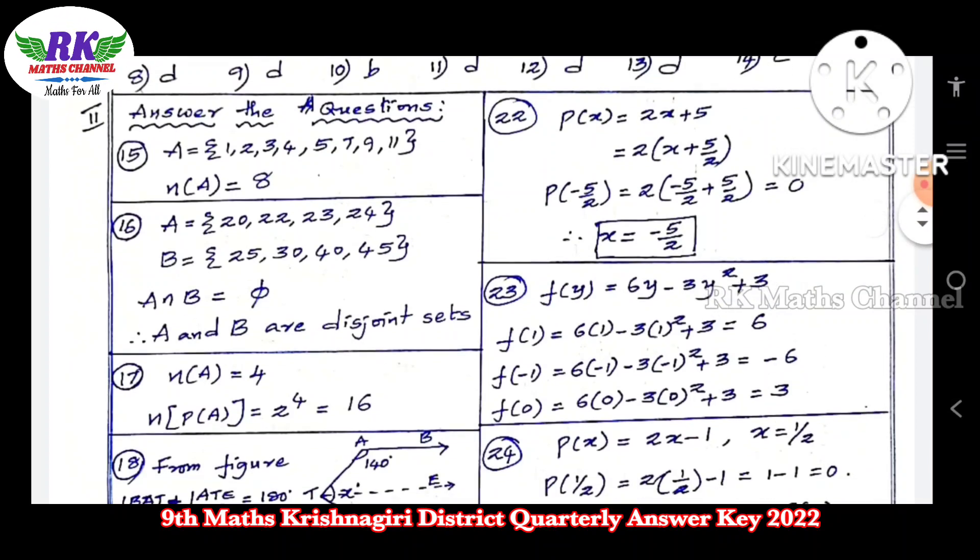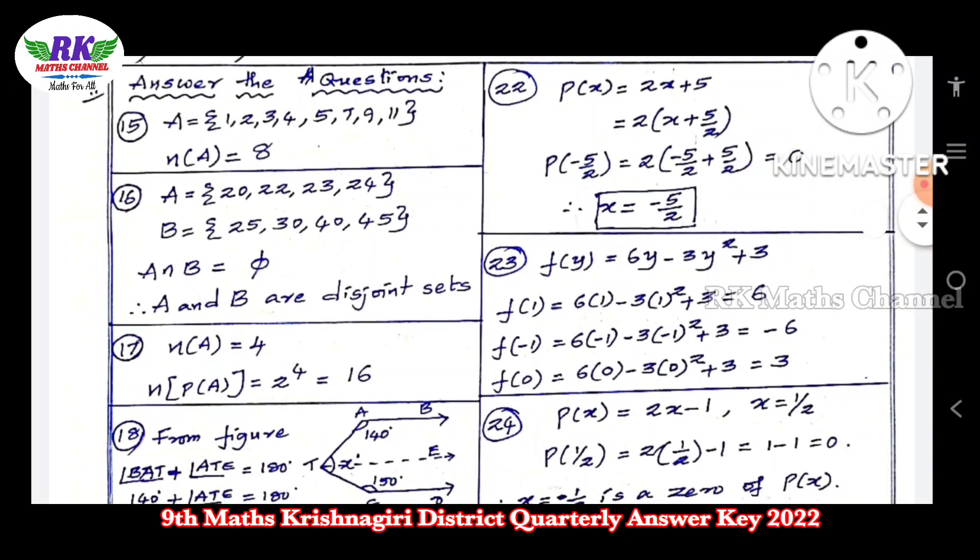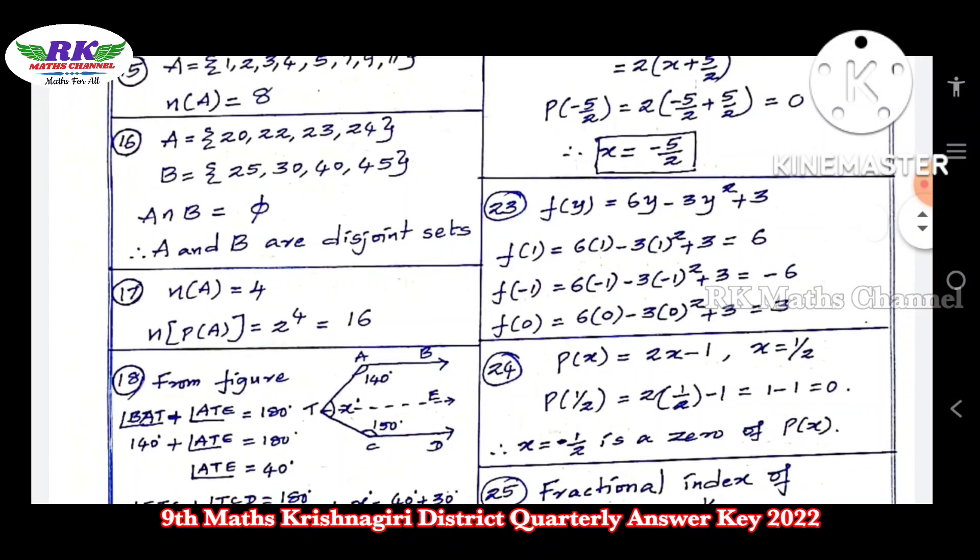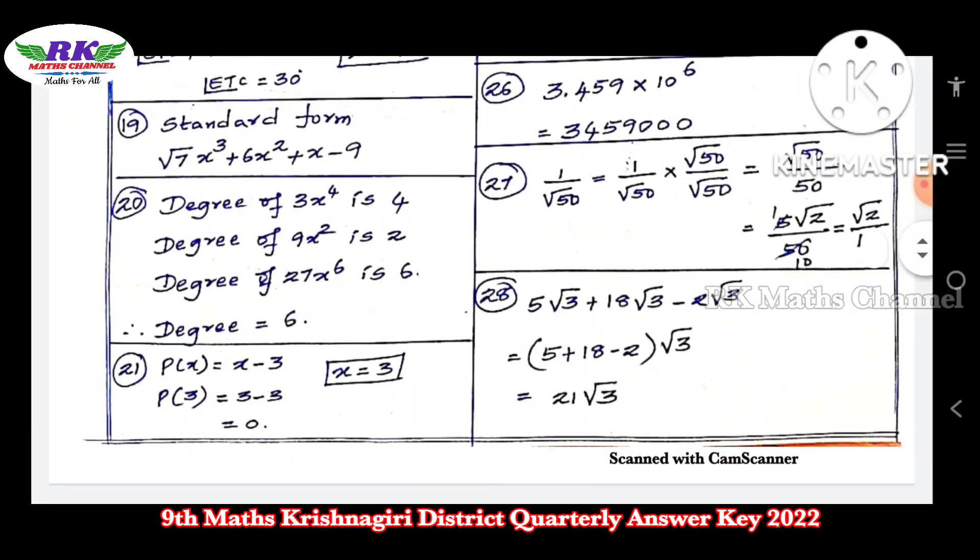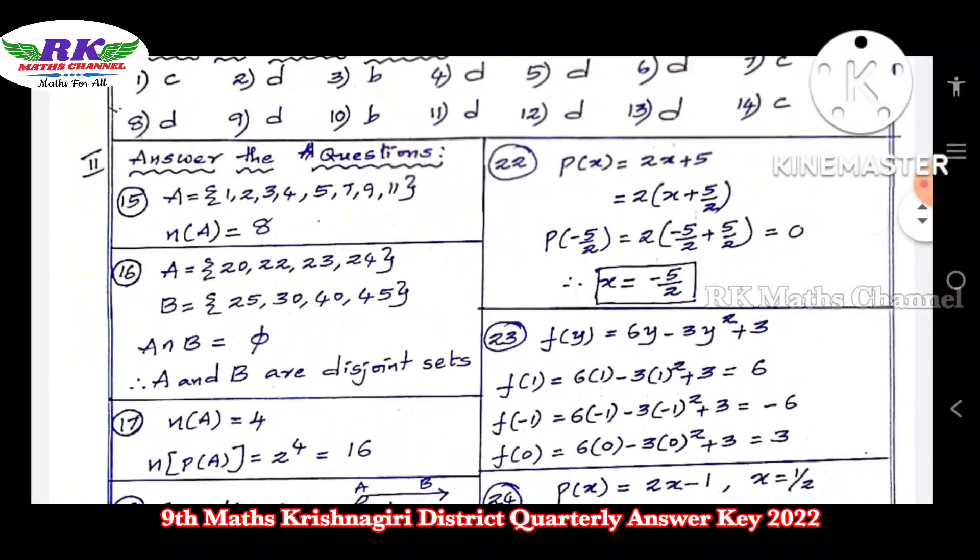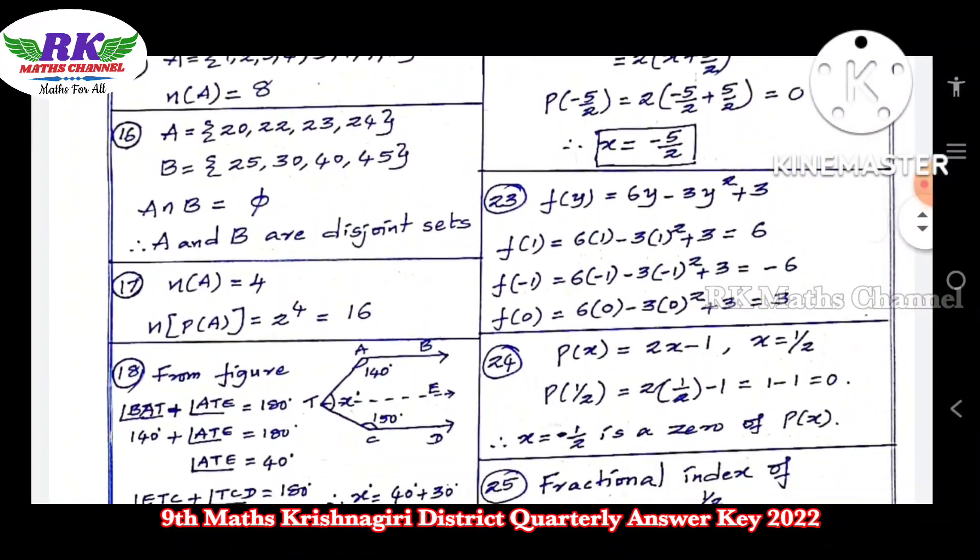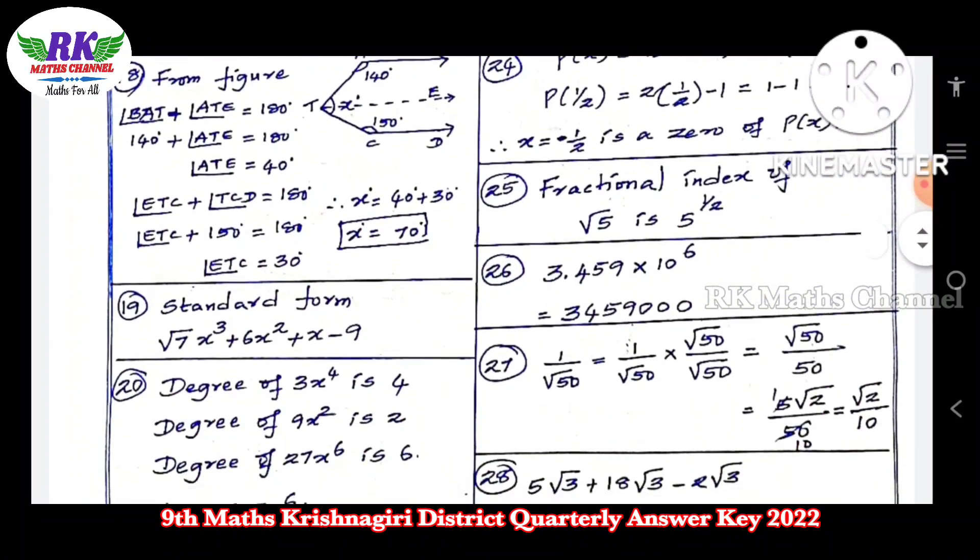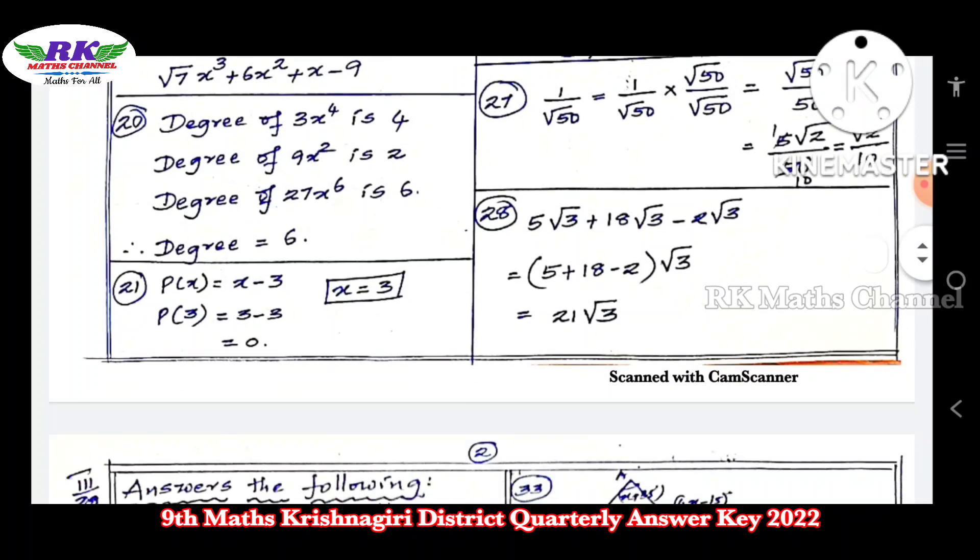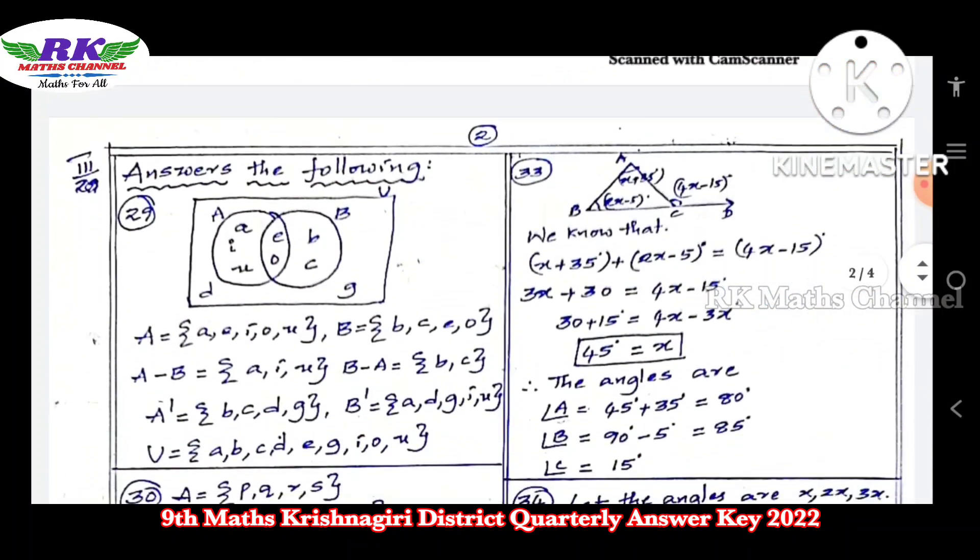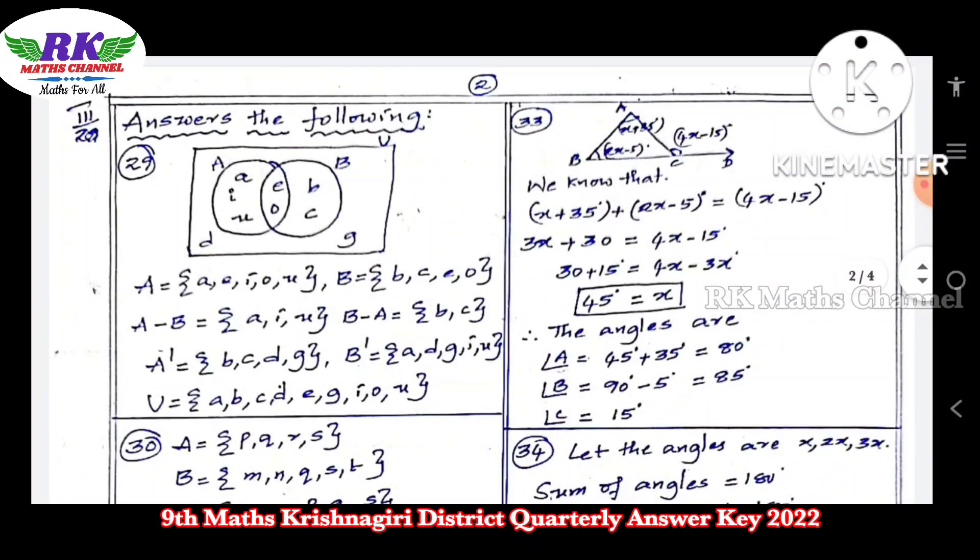Next, let's look at the two mark questions. Questions 15, 16 are easy. Then 17, 18, 19, 20, 21, 22, 23, 24, 25, 26, 27, 28. So these are all two marks. Next, let's look at the 5 marks questions.